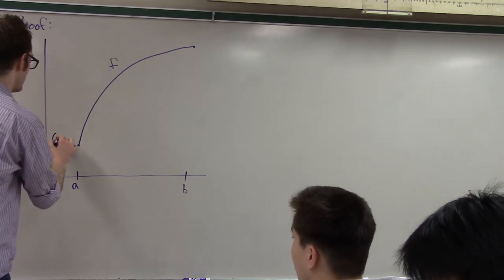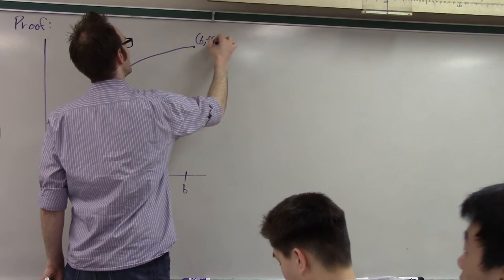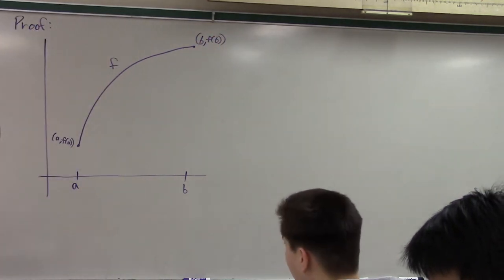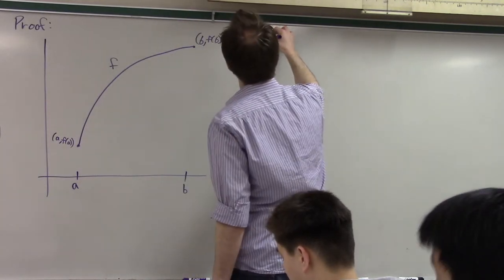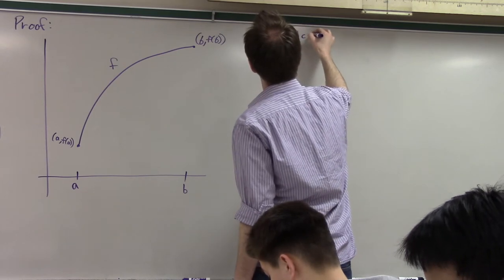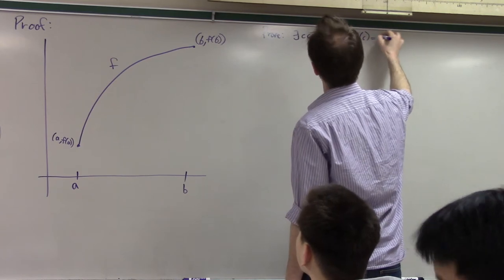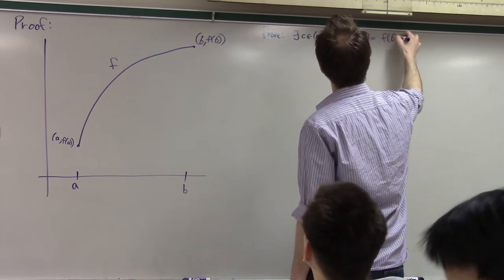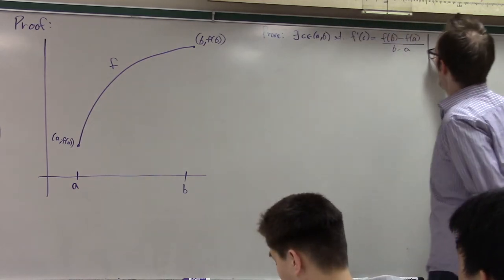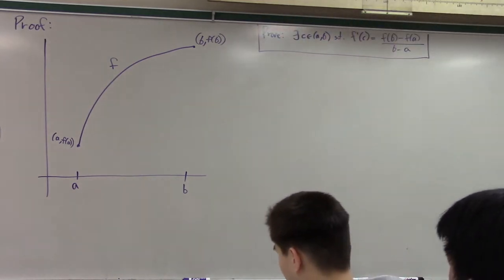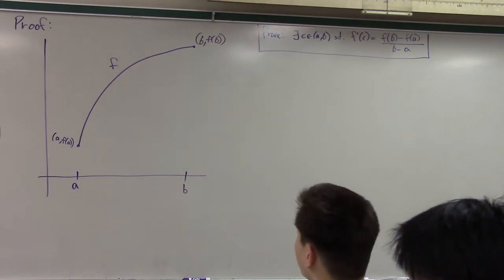All right, and, of course, this point is A, F of A, and this point is B, F of B. Okay. What I'd like to do is to prove, what I need to prove, is that there exists a point C on the interval A, B, such that F prime of C equals F of B minus F of A over B minus A. In other words, find that point on this interval, show that there must exist a point on that interval in which the instantaneous rate of change equals the average rate of change.